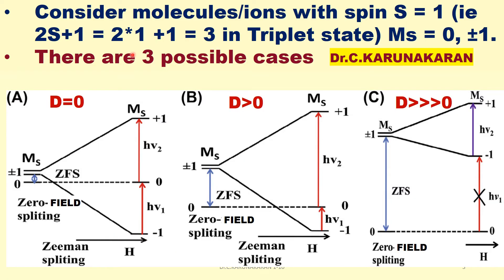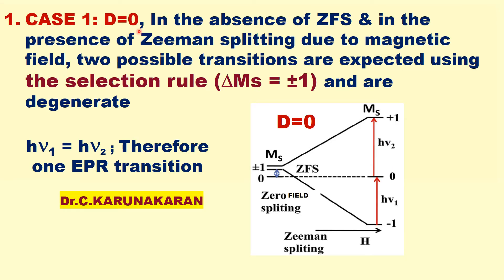Consider molecules or transition metal ions with total spin S = 1. The spin degeneracy gives ms values of 0, +1, and -1 — three spin degenerate levels. There are three possible cases based on zero field splitting: Case 1 where D = 0, Case 2 where D > 0, and Case 3 where D is very much greater than 0 due to high spin-orbit coupling.